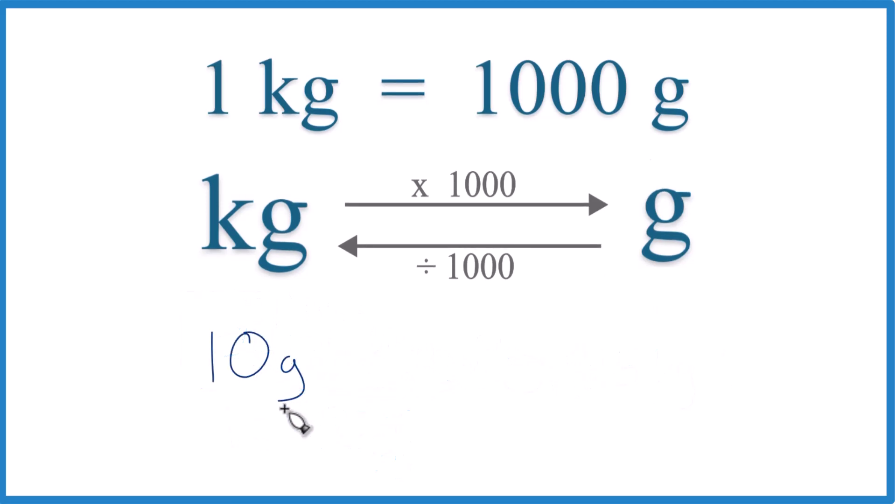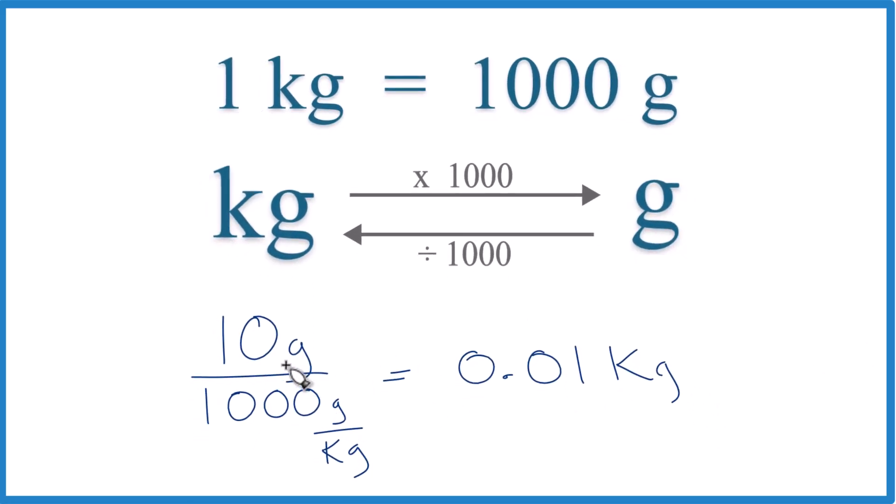So pause. Convert 10 grams to kilograms. So grams are gone, left with kilograms. And we go 1, 2, 3. So we'll put a 0 here. So we have 0.10 over 1. So we just write 0.01 kilograms.